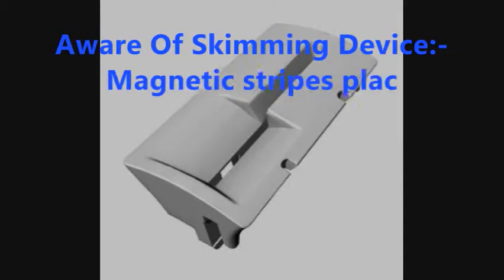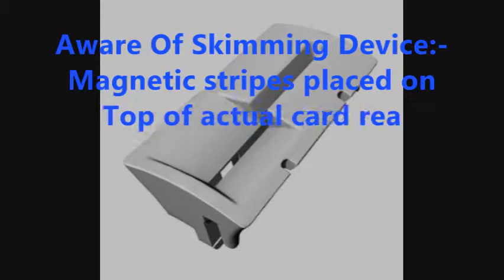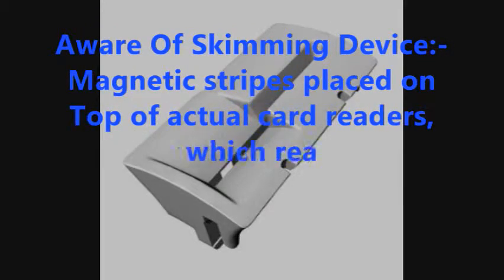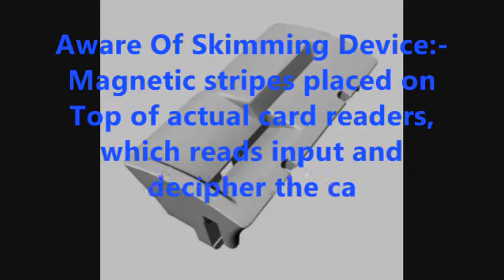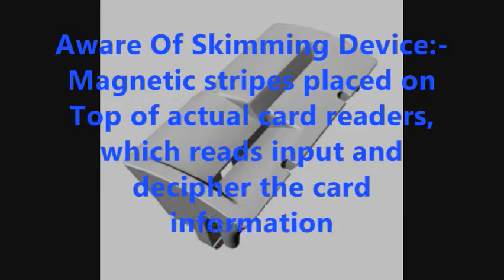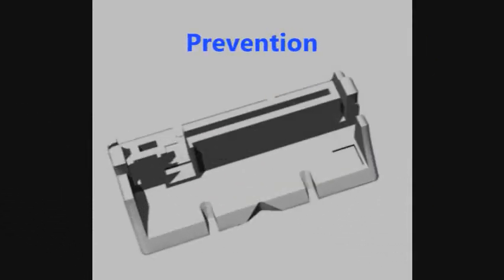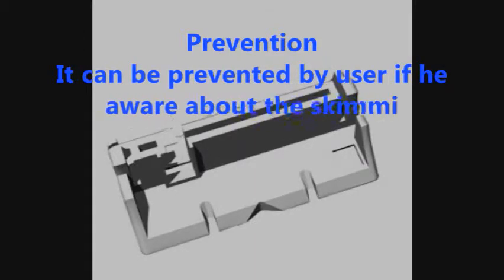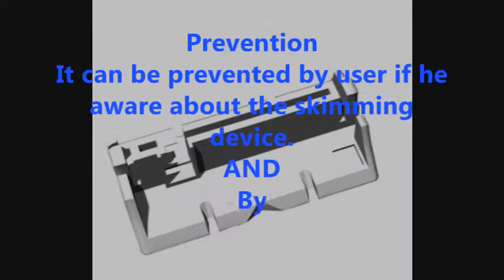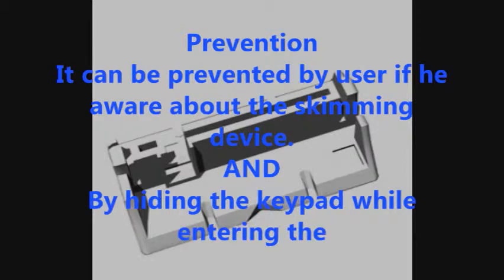Be aware of skimming devices. A skimming device is a magnetic stripe placed on top of actual card readers which reads input and deciphers the card information. It can be prevented if the user is aware of the skimming device and by shielding the keypad while entering the PIN.